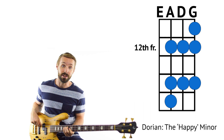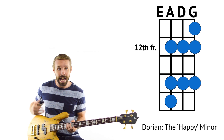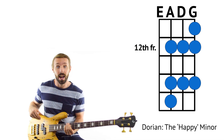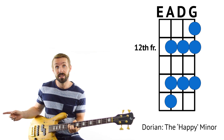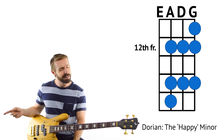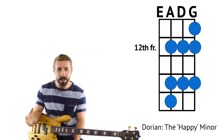Next we have Dorian. This is the first of our minor-sounding modes — everything up until now had a major 3rd. This is our first with a minor 3rd. The only note that changes between Mixolydian and Dorian is the major 3rd becomes a minor 3rd. Dorian still has that major 6th in there, so it's kind of like a happy minor mode — it's almost bittersweet. Spend as much time as you need with all these.